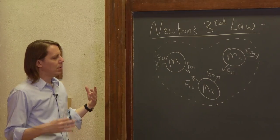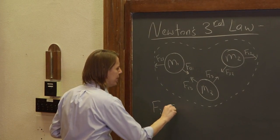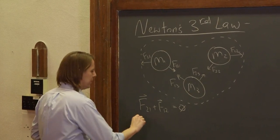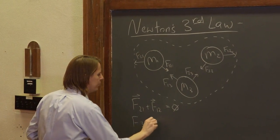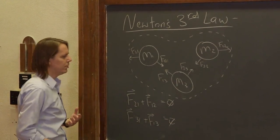So if we draw all these forces, they actually would all cancel, right? So F21 plus F12, if we wrote them as vectors, would be equal to 0. F31 plus F13 would be equal to 0.